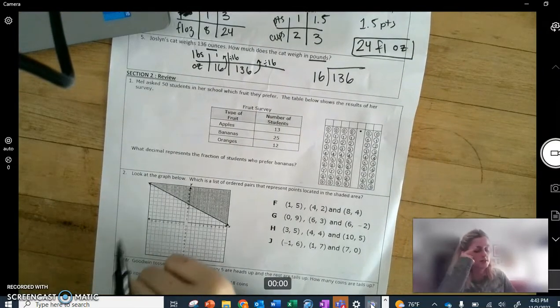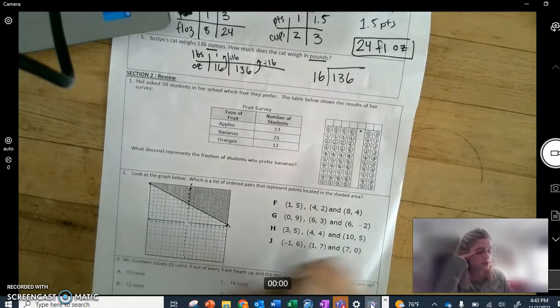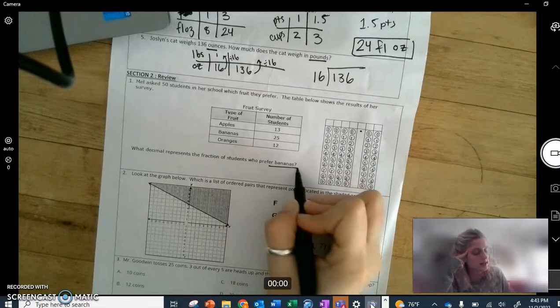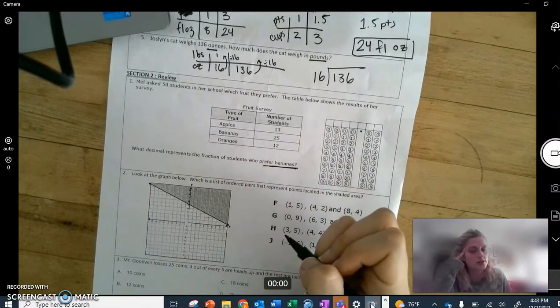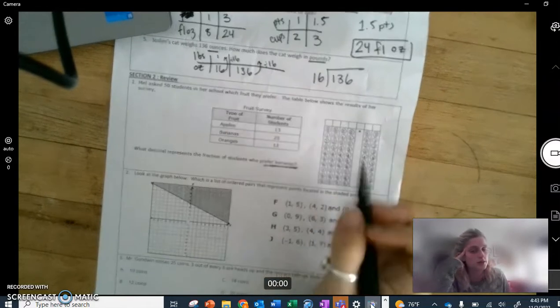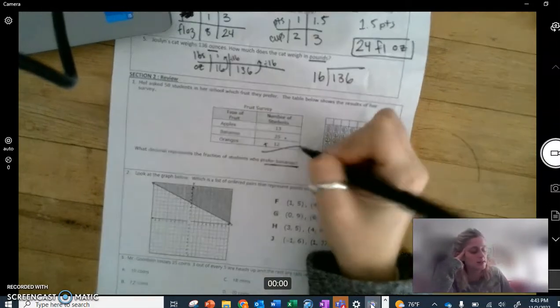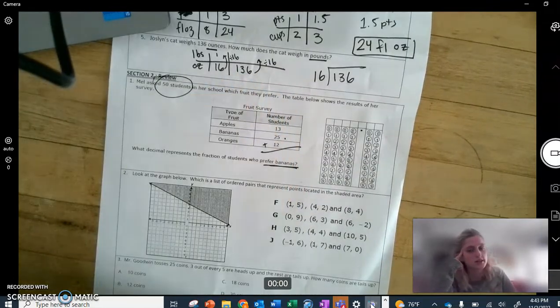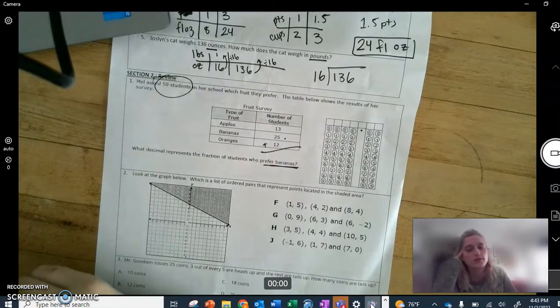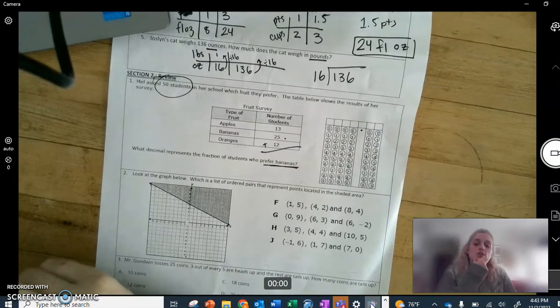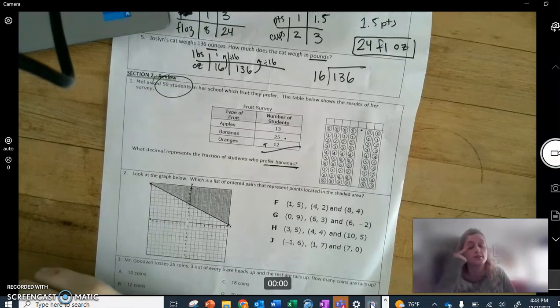Let's see. Mel asked 50 students in her school which fruit they prefer. The table below shows the results. What decimal represents the fraction of students who prefer bananas? So to write a fraction you need the part who like bananas out of the whole number of kids who were asked. Part who like bananas, after you add them all up. Also I already told you what that number is, but you cannot make decimals out of 50ths, so you're then going to have to convert your fraction to a fraction out of 100 and then make it a decimal.